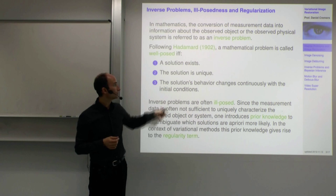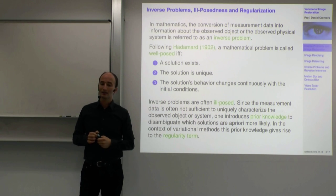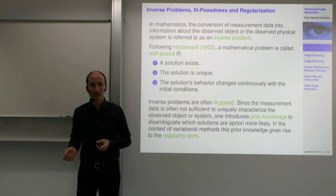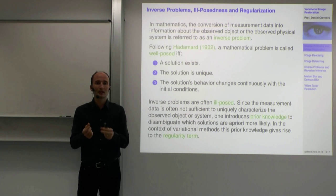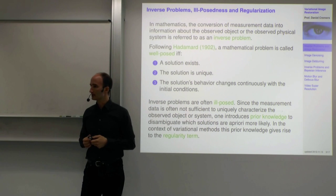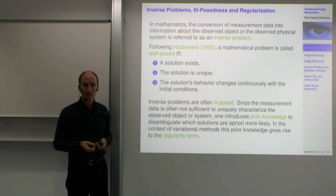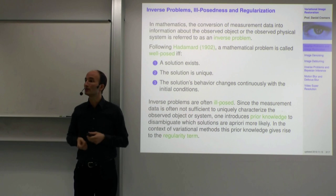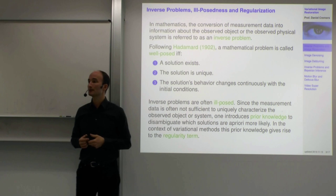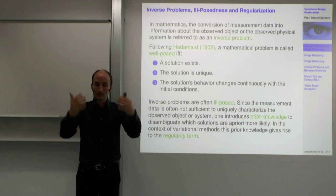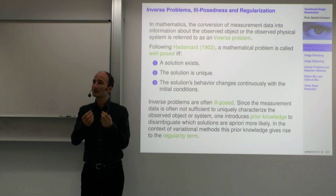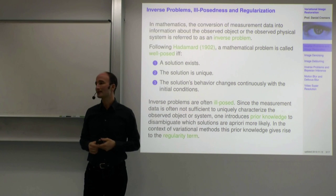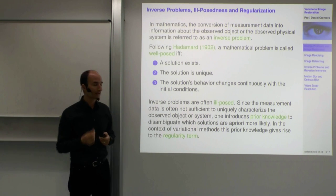This is a property of continuity in some sense. You can imagine this is useful because if the solution changes drastically when the input changes just a tiny bit, that is something you may not want. You want a certain notion of stability — the solution should not be affected too much if I perturb my initial conditions. If you take an image, brightness values can change a little due to noise, but your interpretation about what is in the image should not be drastically affected.